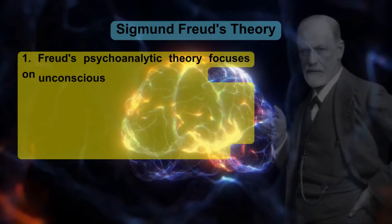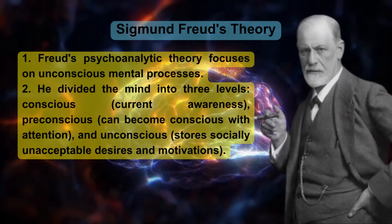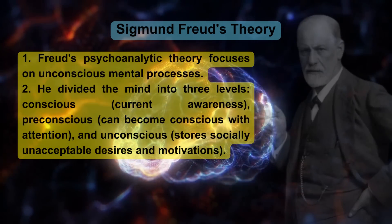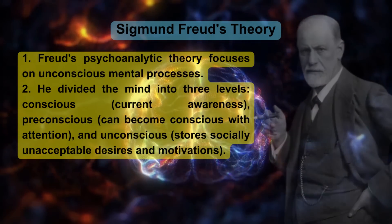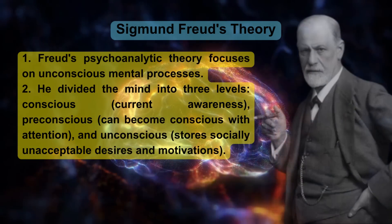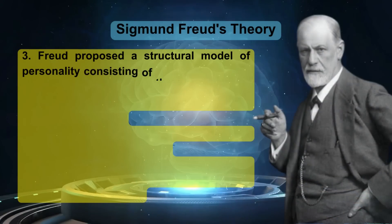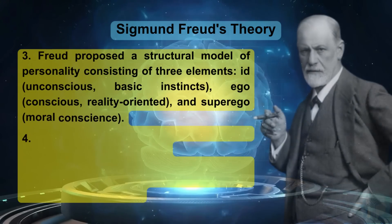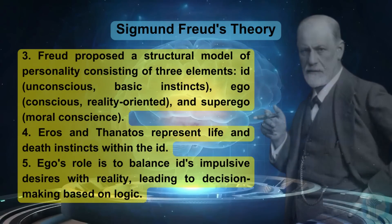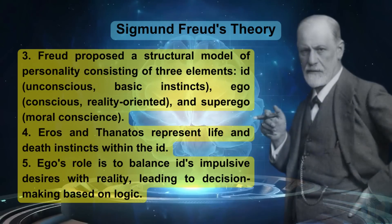Sigmund Freud's psychoanalytic theory focuses on unconscious mental processes. He divided the mind into three levels: conscious (current awareness), preconscious (can become conscious with attention), and unconscious (stores socially unacceptable desires and motivations). Freud proposed a structural model of personality consisting of three elements: id (unconscious, basic instincts), ego (conscious, reality-oriented), and superego (moral conscience).